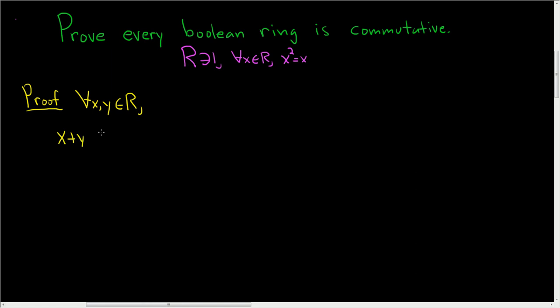That's an element in our ring, and our ring is a Boolean ring, so every element is idempotent. In particular, x plus y is idempotent, so this is the same as x plus y quantity squared. And this means x plus y times x plus y.